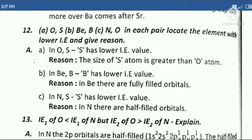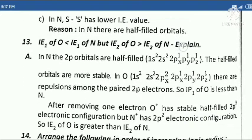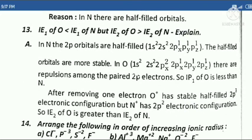Twelfth question: A. Os and B, B. Be and B, C. N and O — in each pair locate the element with lower ionization energy (IE) and give reason.